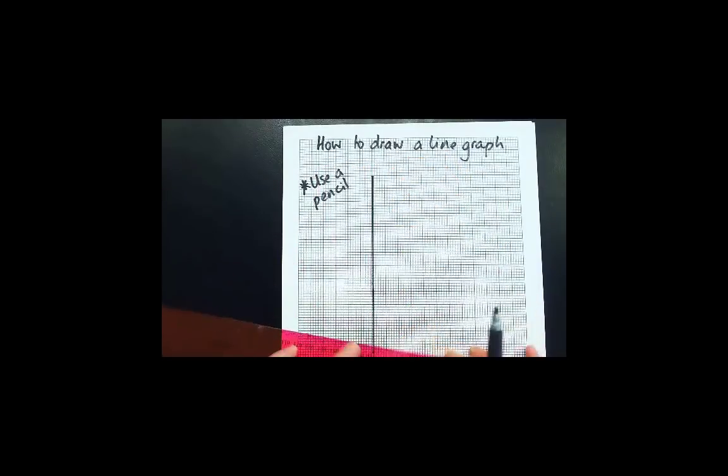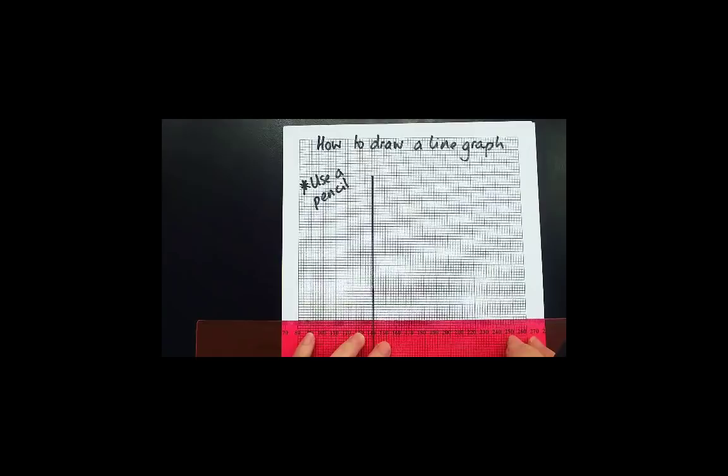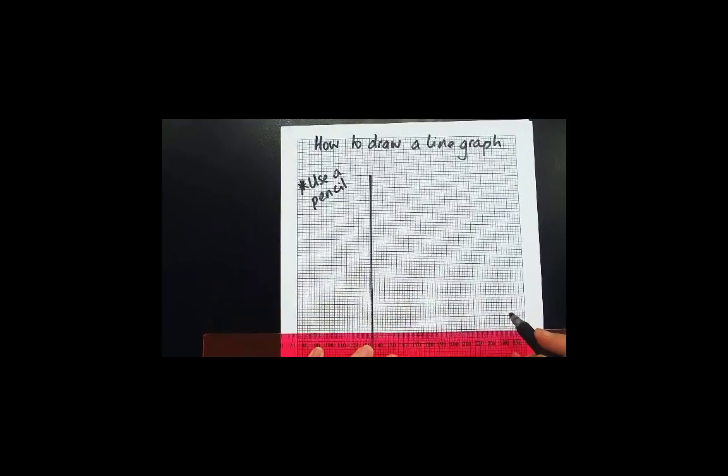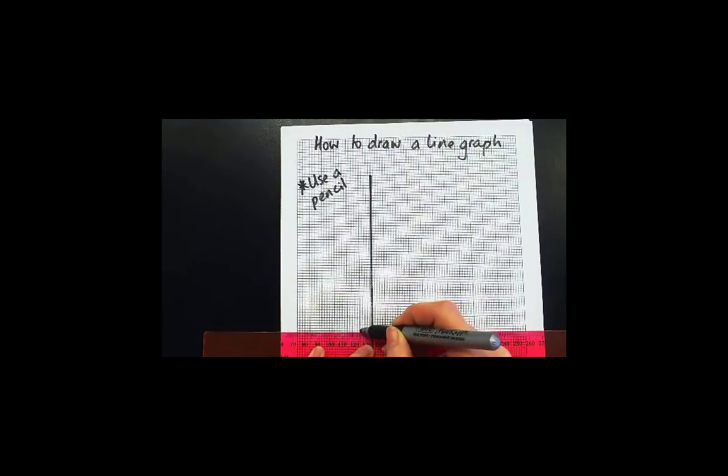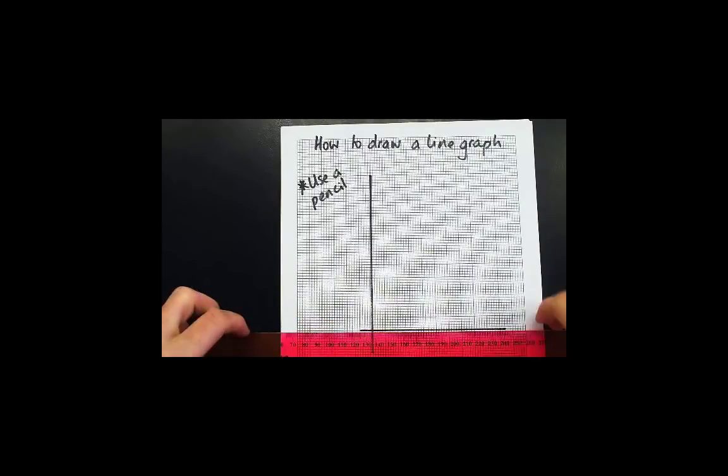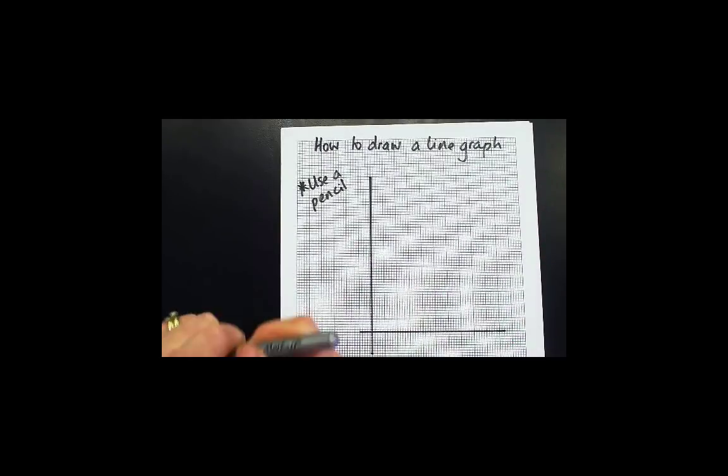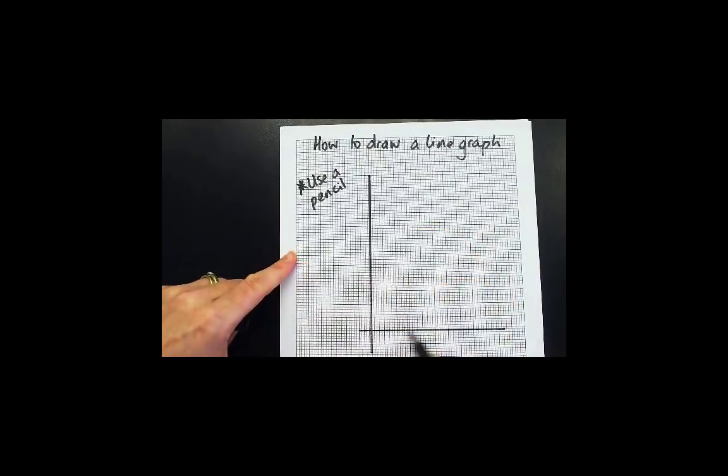You need two axes for your data and you use a ruler to draw them. On the x-axis you put the data which is in your independent variable. That's the one that you planned out at the beginning of the experiment before you started collecting your data.